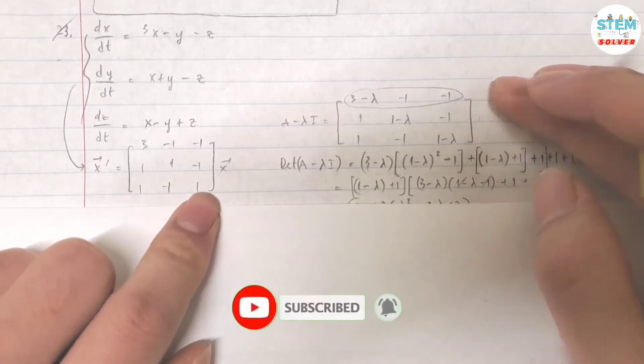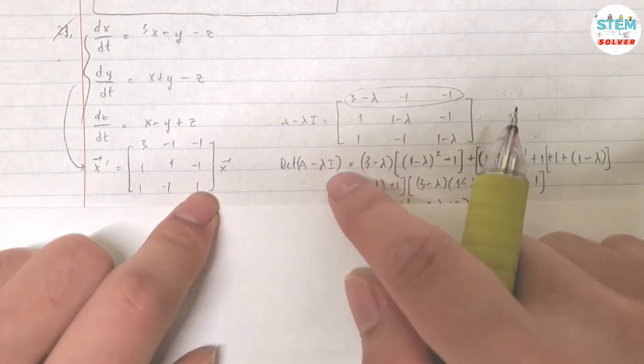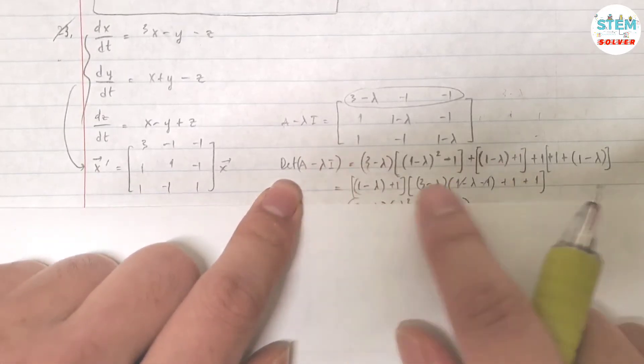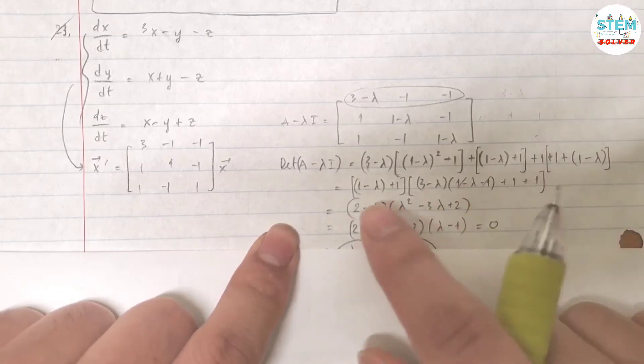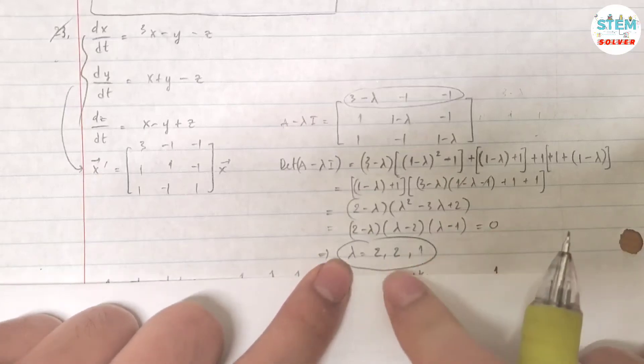And then you are going to find A minus lambda I. Then find the determinant of A minus lambda I. That gives you this. Distribute this out and then simplify it down to here. Set this equal to 0, then solve for lambda. You will get lambda equals 2 to 1.